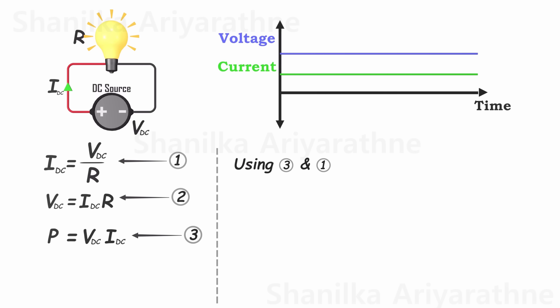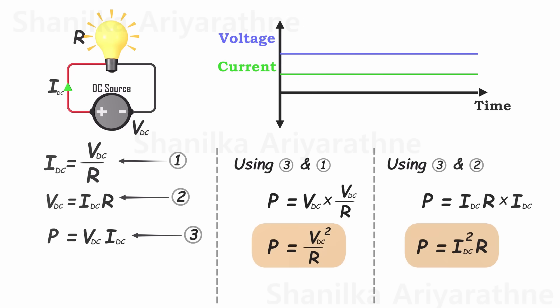We can take the third equation and the first one to derive a new equation. Power equals the voltage squared divided by the resistance. Similarly, using the third equation with the second one allows us to derive another new equation. Power equals the current squared times the resistance. Keep these in mind. These two equations will be utilized later.